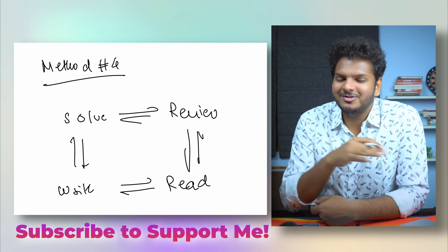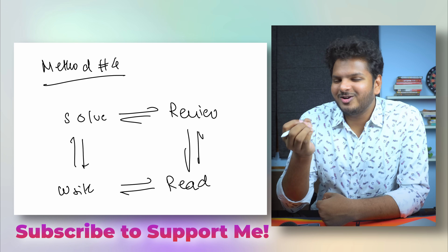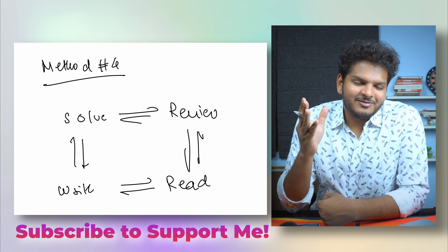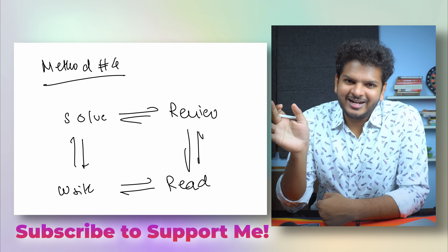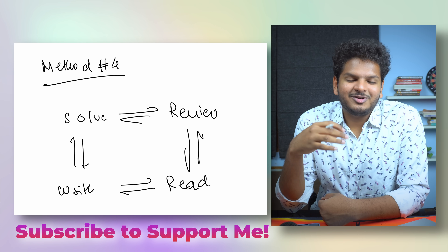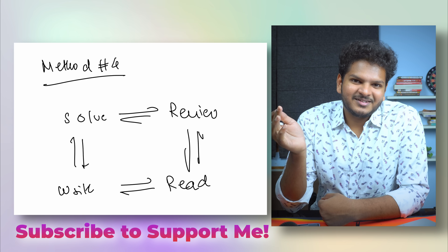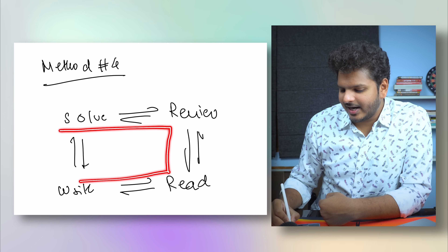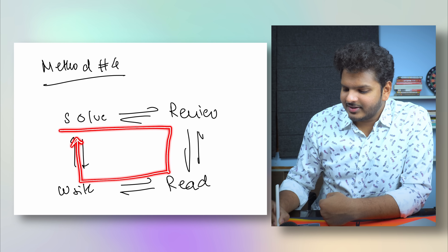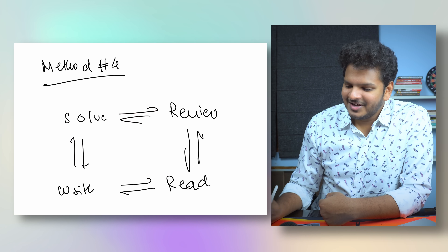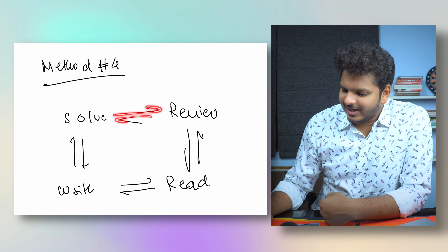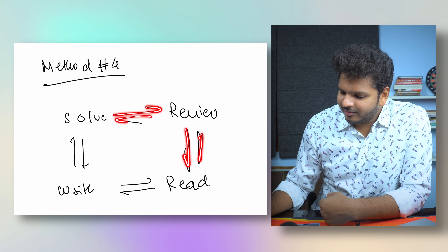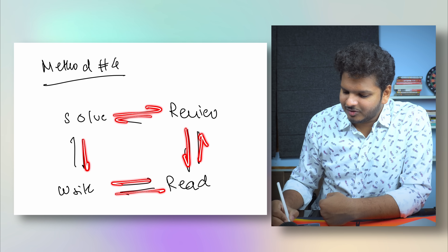So Method 4 is: solve, review, read, write, then go back to solving — and this works in equilibrium, meaning at any point you can solve and review together, review and read together, read and write together, or solve and write together. That's the beauty of this method.